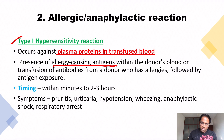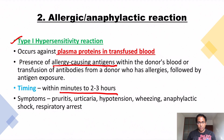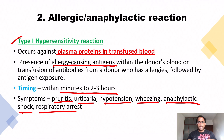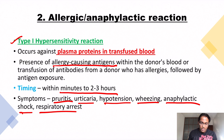The timing for this reaction is within minutes to 2 to 3 hours — quite faster than the febrile non-hemolytic reaction. The symptoms include itching (pruritus), urticaria (a rash), hypotension, wheezing, anaphylactic shock, and respiratory arrest. All of this is because of histamine, which is a vasoactive amine. The two key things to remember about histamine: it causes bronchoconstriction and vasodilation.